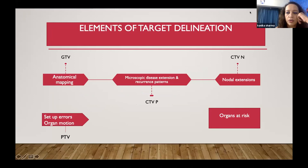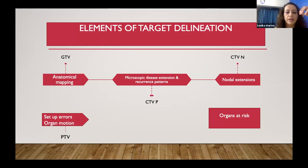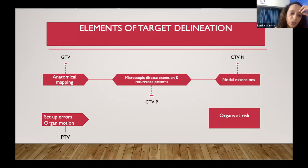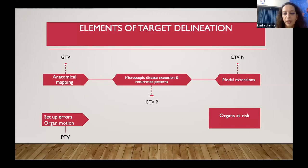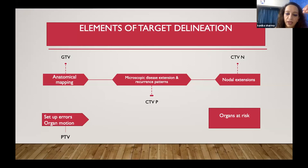Any target delineation has few elements. First, we need knowledge of the GTV — the gross tumor — which comes from anatomical mapping. Anatomical mapping information comes from multiple inputs: clinical findings, radiology, and in post-op cases the surgical findings and histopathology report. The next important factor is microscopic disease extension, which is unique to each tumor. We have information from tumor biology about how far it can extend into adjoining tissues, and from recurrence pattern studies about areas where tumor can fail — these contribute to clinical target volume inputs.